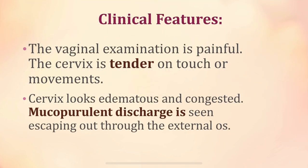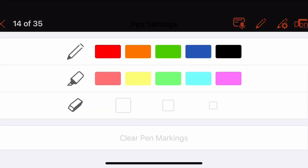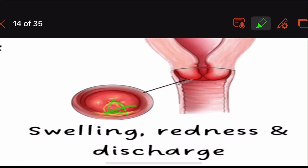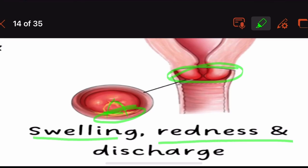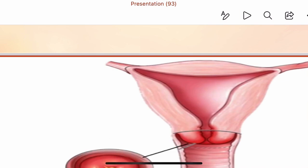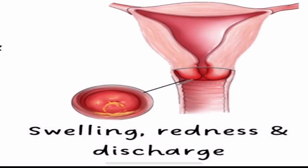In acute cervicitis, the cervix is tender on touch or movement. It appears edematous and congested — swollen and red — and mucopurulent discharge can be seen escaping through the external os. The classic signs are edema, congestion, redness, and mucopurulent discharge.